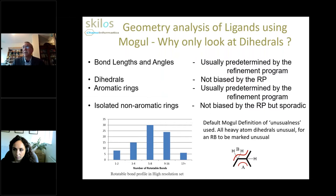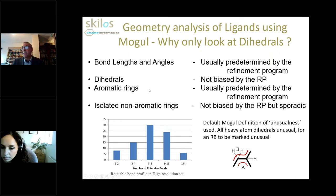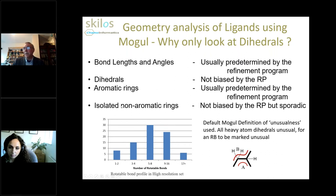Mogul looks at bond lengths, bond angles, dihedrals, and ring geometries. In this work, I'm focusing only on dihedrals to look for unusual geometry. Bond lengths and bond angles are often predetermined by the refinement program used in protein crystallography because we don't have atomic level resolution, and the same is often true for aromatic rings. But dihedrals are not generally biased by the refinement program — they're allowed to freely take up their positions. Non-aromatic ring geometry is also not biased by refinement, but it's sporadic, so this analysis focuses on dihedral geometry.